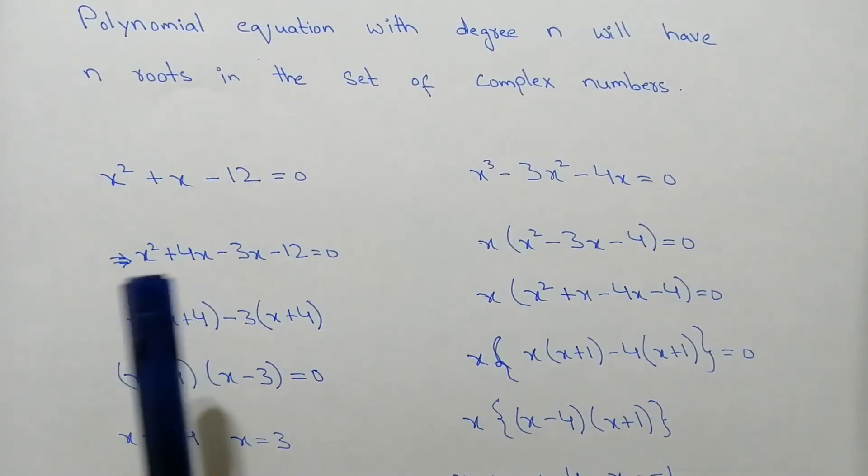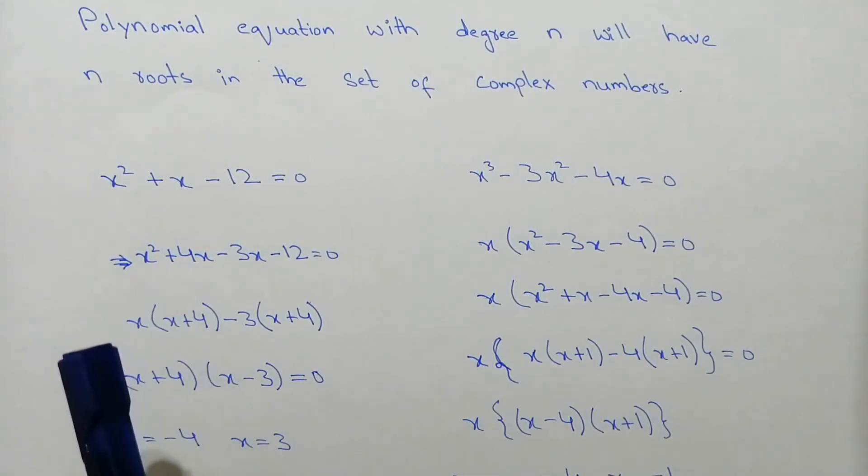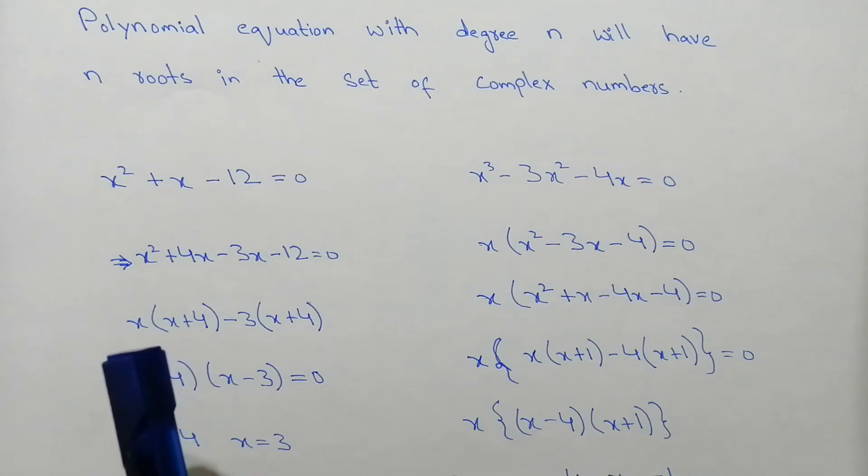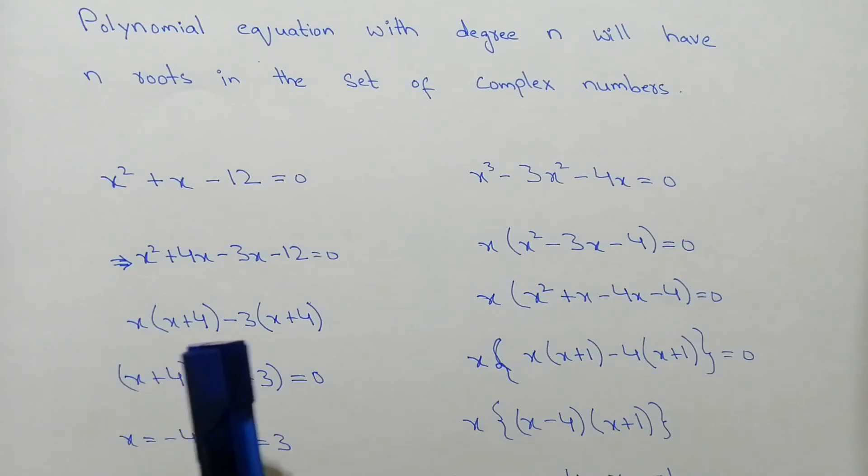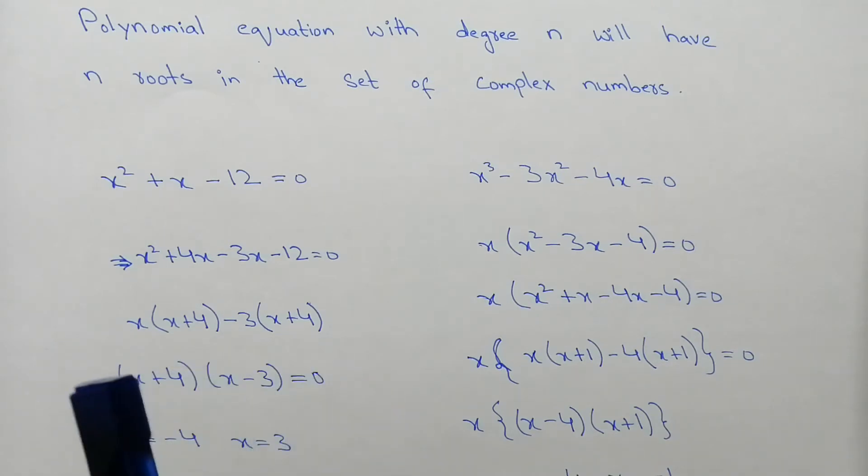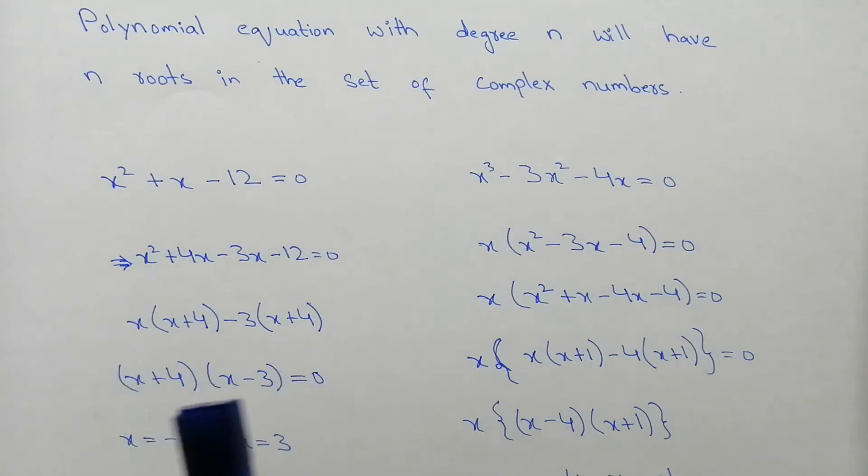Taking x common from these two, so x in the bracket x plus 4, minus 3 common, so x plus 4. So these two roots are x plus 4 and x minus 3. So the two roots are x is equal to minus 4 and x is equal to 3.